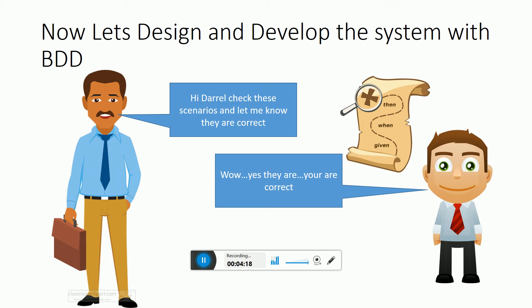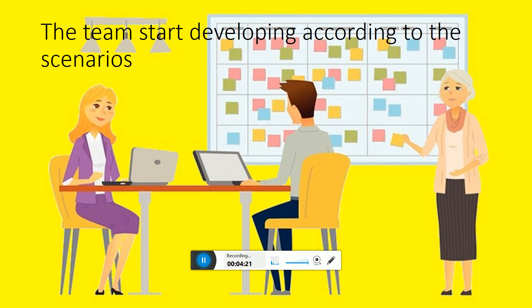Jake takes these feature files — these Given-When-Then scenarios — to the development team. The team starts developing according to the scenarios. The QA person gets the feature files and gives them to the automation engineers, who develop automated test cases according to what is needed. The developers build the system according to the feature files specified by Darrell and Jake.